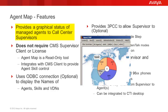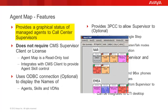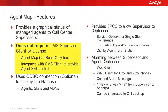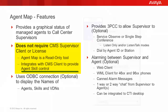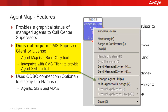AgentMap provides a simple click-to-use GUI interface that shows, in real-time, the status of all agents represented on the map. AgentMap is a read-only tool and does not require a CMS supervisor license or client to be installed. If a CMS supervisor client is installed and active, AgentMap will use it to provide administrative and skills management to the AgentMap user.